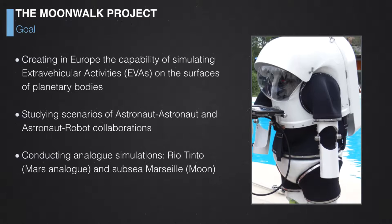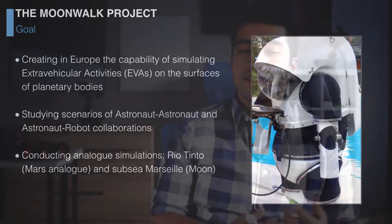The simulations are being conducted in Rio Tinto, in the desert, which serves as an analog of the Martian surface, and in Marseille, at the bottom of the sea, which is an analog of the Moon — because there we can simulate very well the partial gravity conditions of the Moon, which are one-sixth of Earth's gravity.